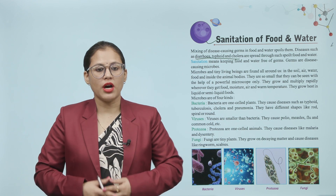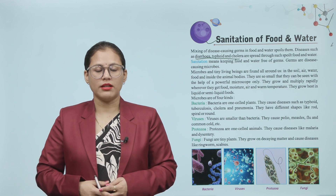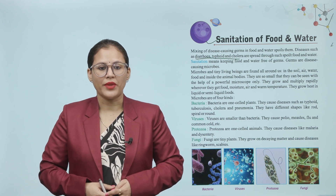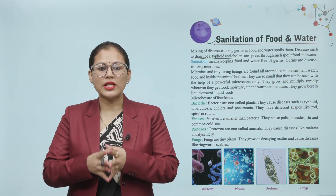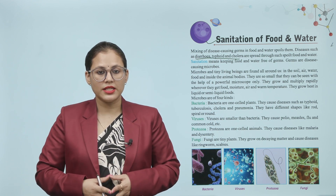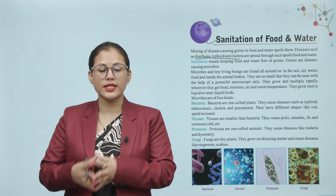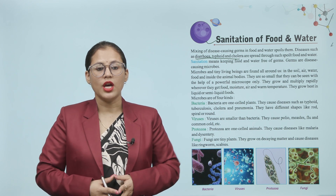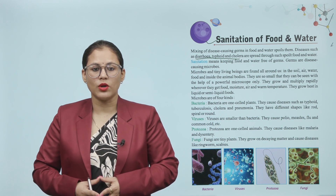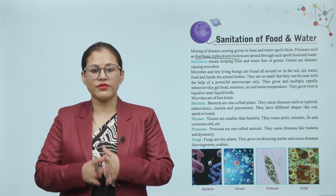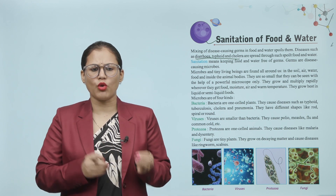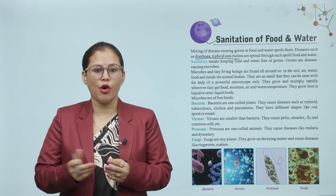Microbes are of four kinds. First: Bacteria — one-celled plants. They cause diseases such as typhoid, tuberculosis, cholera and pneumonia. They have different shapes like a rod, spiral or round.